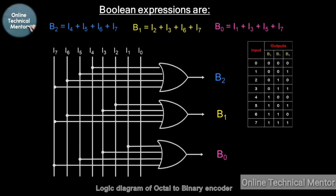Now let's check this against the truth table. Suppose we take input 3 as an example — that means I3 is high. When I3 is high, there are two connections from the I3 line: one connected to the B1 OR gate and one connected to the B0 OR gate. So when a high input is given to I3, both B1 and B0 become high while B2 remains 0. You will get output 011, which is the binary conversion of octal 3.